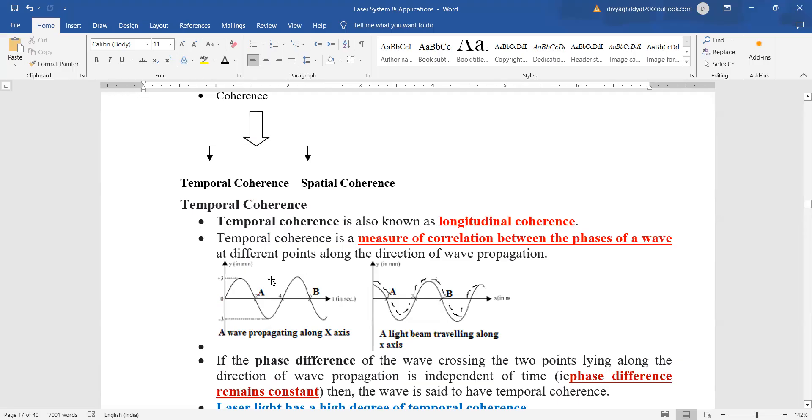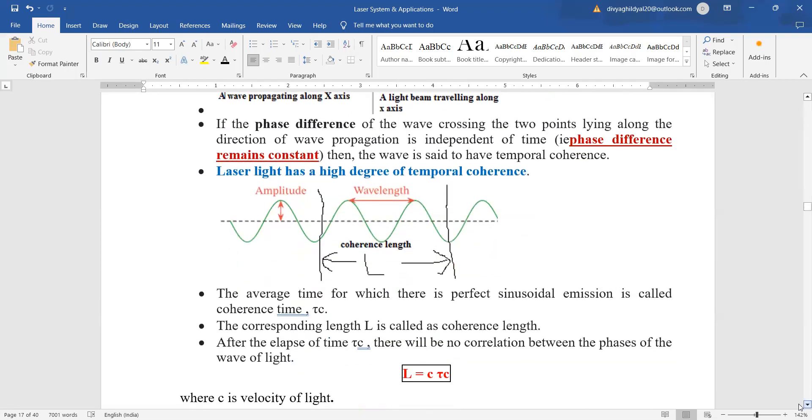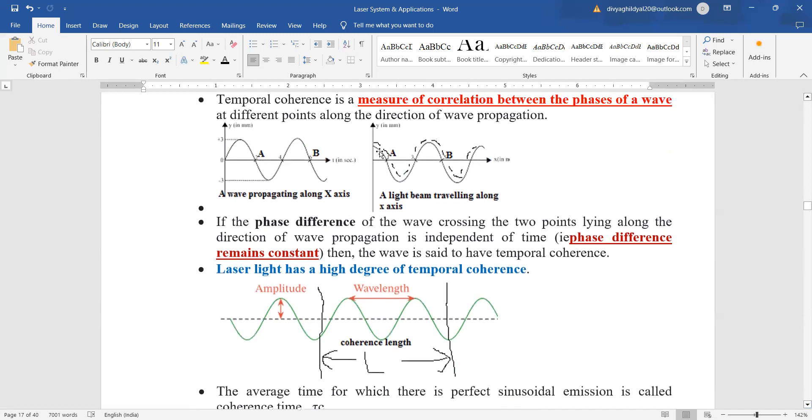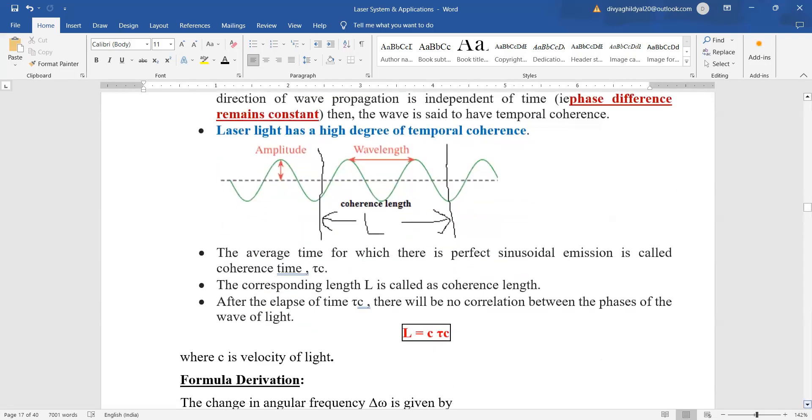Temporal coherence. Now look at this diagram. It is basically a measure of the relationship or the correlation between the phases of a wave at different points along the direction of wave propagation are coherent or they are in correlation. This happens in temporal coherence. And if the phase difference of the waves crossing the two points lying along the direction of wave propagation are independent of time that means as you can see here in this figure the phase is remaining constant then we say that it is temporal coherence and laser light is highly coherent especially the temporal part.